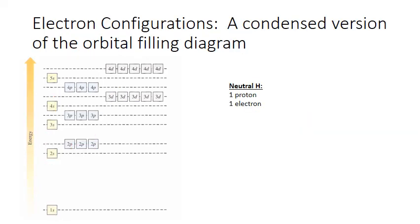Orbital filling diagrams are a bit easier to deal with for representing electron orbitals than quantum numbers, but they are pretty large and not always the most efficient representation. Electron configurations, on the other hand, are a shorthand way of representing the filling diagrams. If the orbital filling diagrams are maps of where the electrons are, then the electron configurations are the written directions.